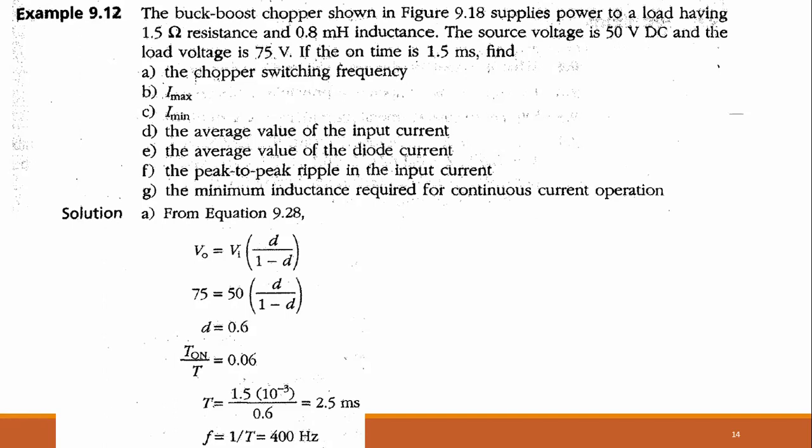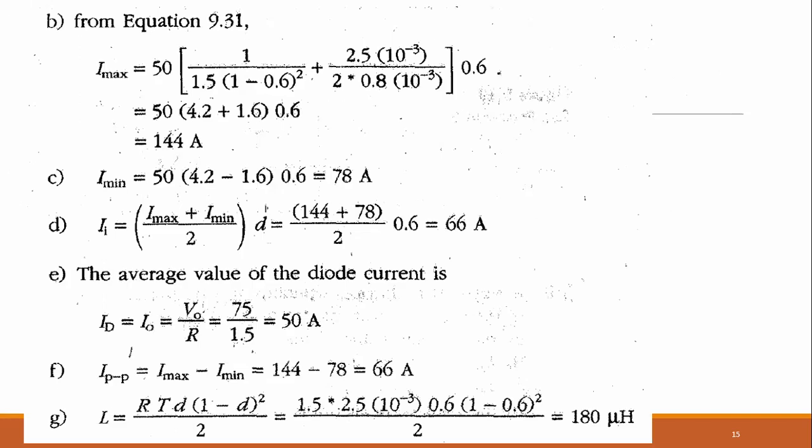To find switching frequency: D equals T_on/T, so T = T_on/D = 1.5 ms / 0.6 = 2.5 millisecond. Switching frequency f = 1/T = 400 Hz. Maximum current equals 144 ampere and minimum current equals 78 ampere using the respective formulas. Average input current equals (I_max + I_min)/2 times D = (144 + 78)/2 times 0.6 = 66 ampere.